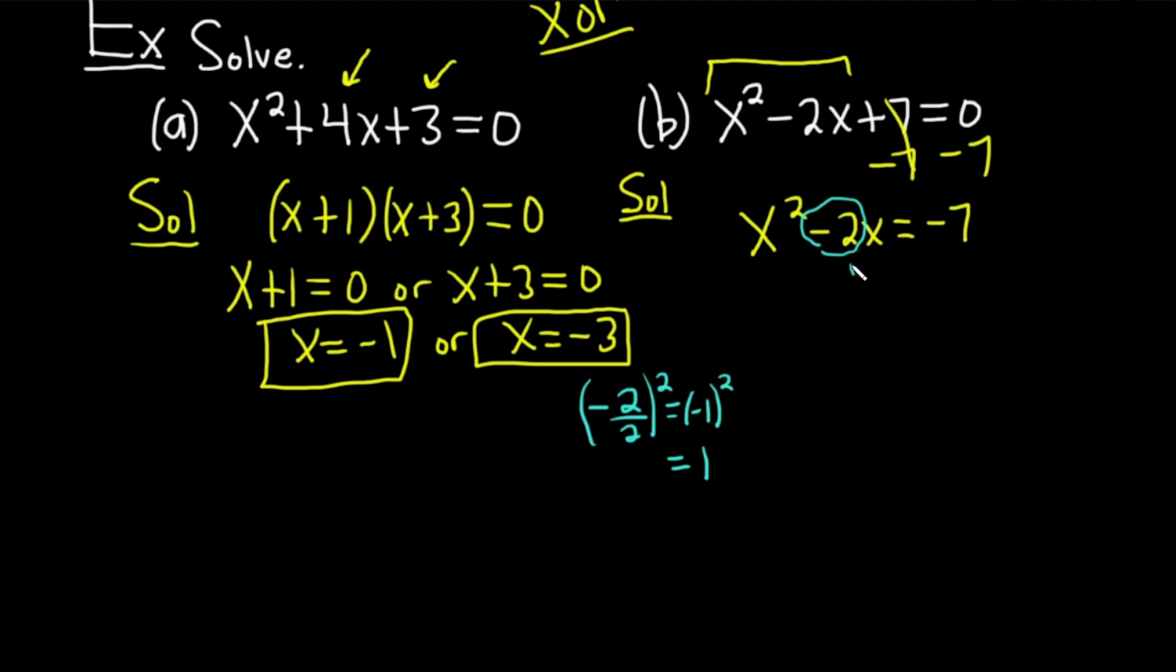Then you add it to both sides. So plus 1, plus 1. That will give us x squared minus 2x plus 1 equals negative 6. So now, this will factor always, okay? So it looks like this: parentheses x, parentheses.